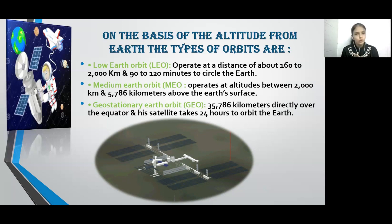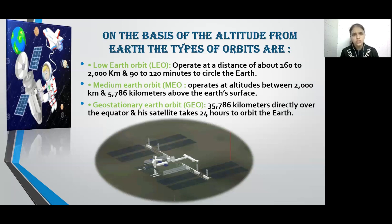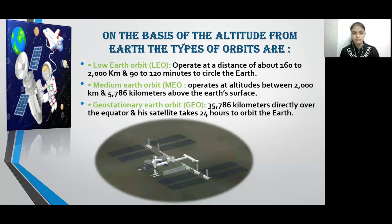In low earth orbits, the satellite takes about 90 to 120 minutes for one revolution around the Earth. Medium earth orbits take six hours for one revolution. Geostationary earth orbits take almost 24 hours to complete a single revolution around the planet.